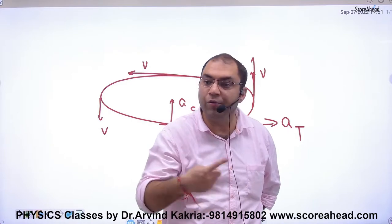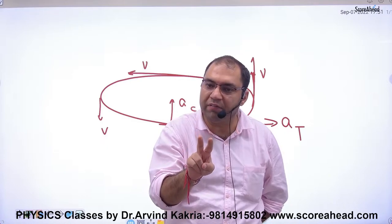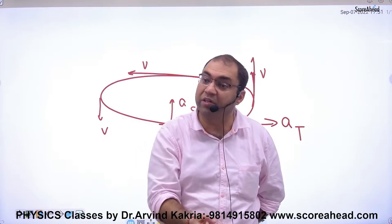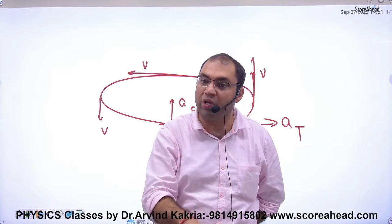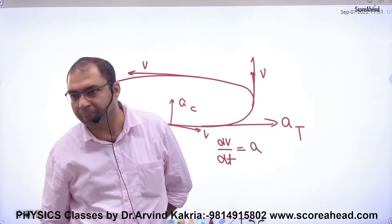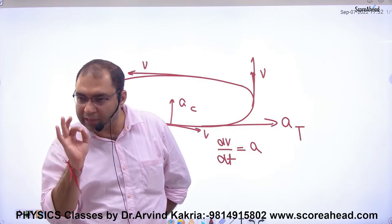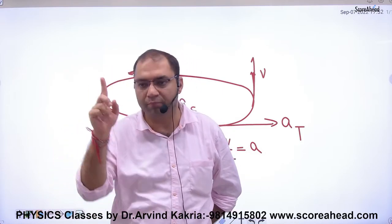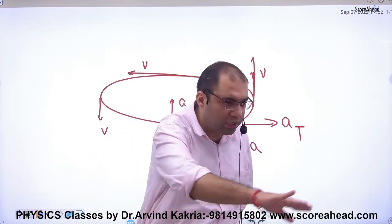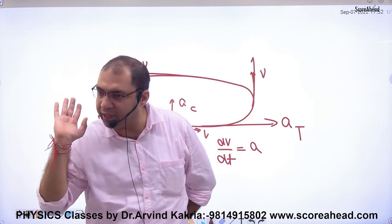So to summarize: if velocity only changes direction, we have centripetal acceleration. If velocity value and direction both change, then centripetal acceleration handles the direction change and tangential acceleration handles the speed change. In uniform circular motion, speed does not change, so we do not consider tangential acceleration.